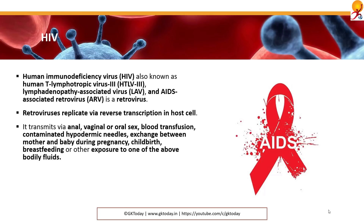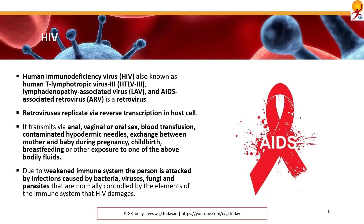HIV transmits via anal, vaginal or oral sex, blood transfusions, contaminated hypodermic needles, exchange between mother and baby during pregnancy, childbirth or breastfeeding. Basically, any exchange of any sort of bodily fluid has a risk of HIV spreading. Due to a weakened immune system, the person is attacked by infections caused by bacteria, viruses, fungi, etc., that are normally controlled by the elements of our immune system. So HIV damages the immune system so that the body can't protect itself.